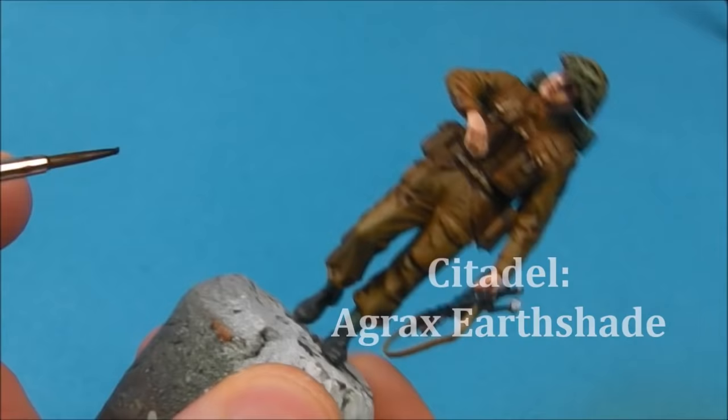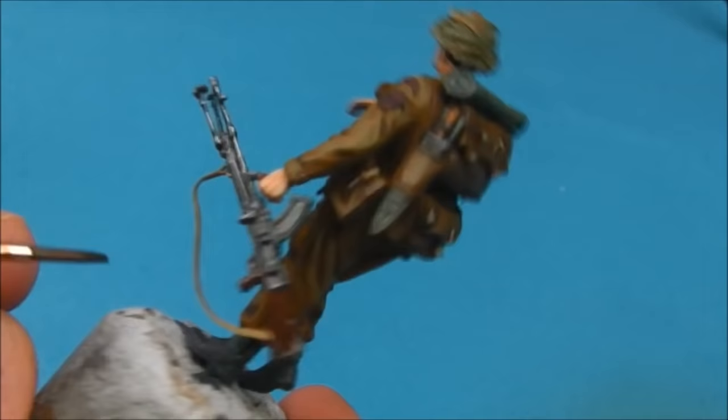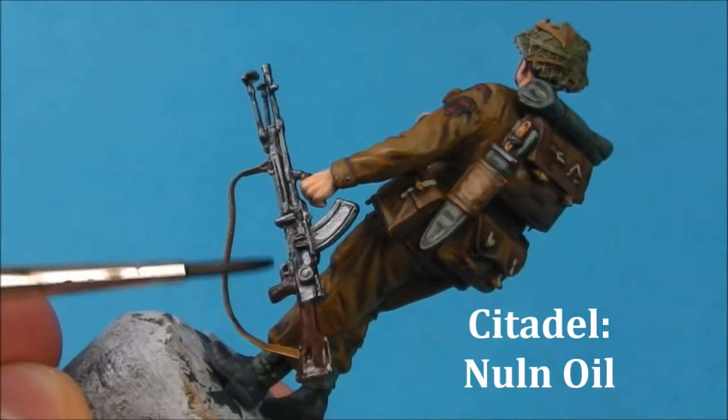I'm just going to add some washes to the weapon. First I'm going to use some Agrax Earthshade on the wooden furniture and the sling. And on the metal parts we're just going to use some Citadel Nuln Oil. This is going to tone everything together and just knock back some of that shininess and make the weapon look a bit more realistic.